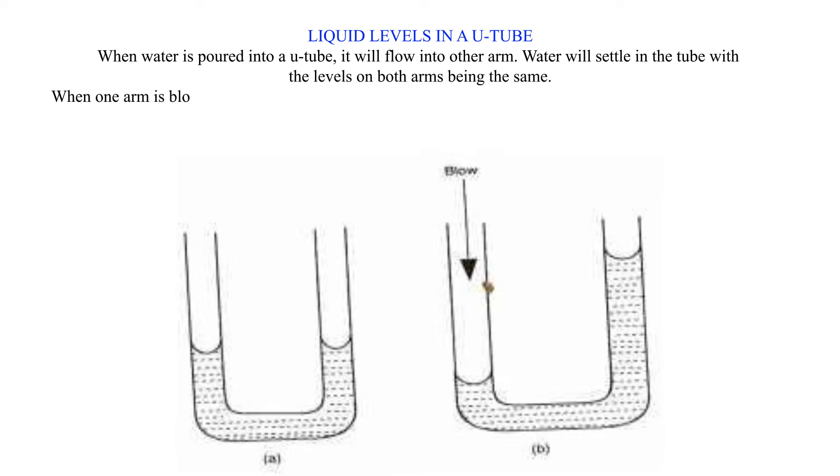When one arm is blown into, the level moves downward while the other arm rises. This is caused by the pressure difference between the two arms.